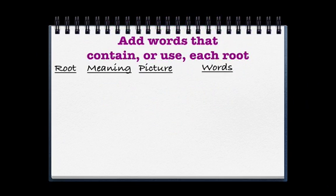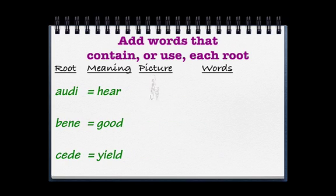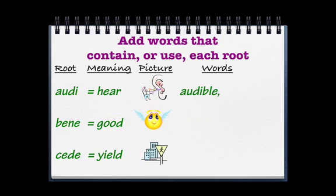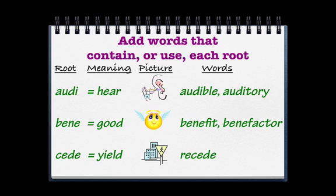After we have done the root, the meaning, and the picture, we are going to add words. We want to add words that use each of them. 'Audi' means 'hear' — audible and auditory are words that match with the root 'audi.' 'Bene' means 'good' — benefit and benefactor are English words that use the root 'bene.' For 'seed,' one word I have is 'reseed.'